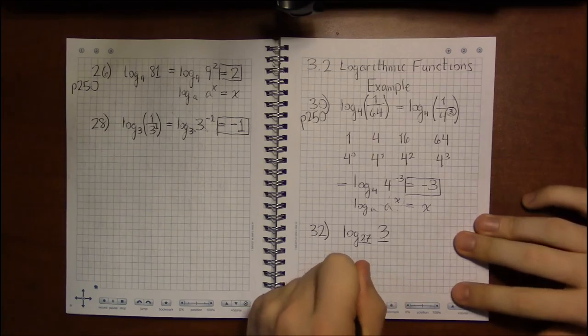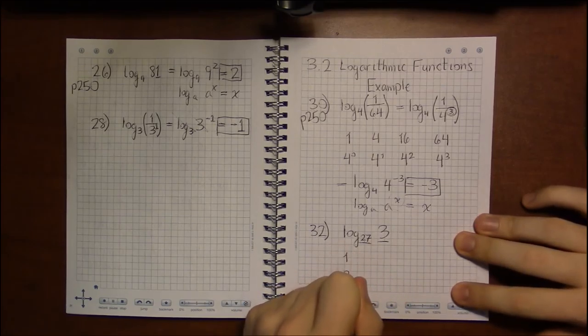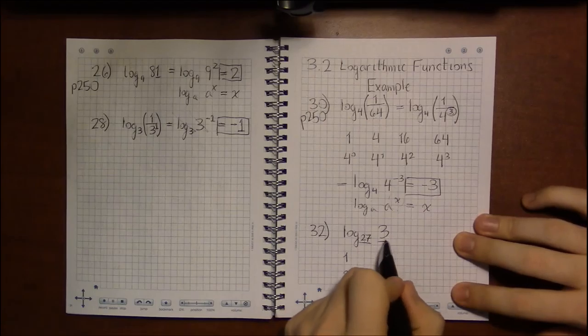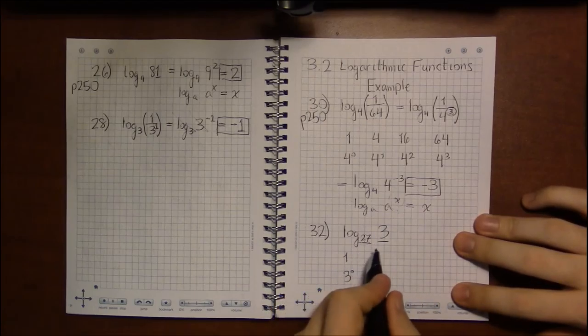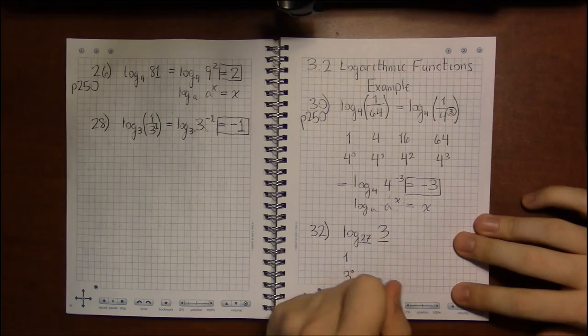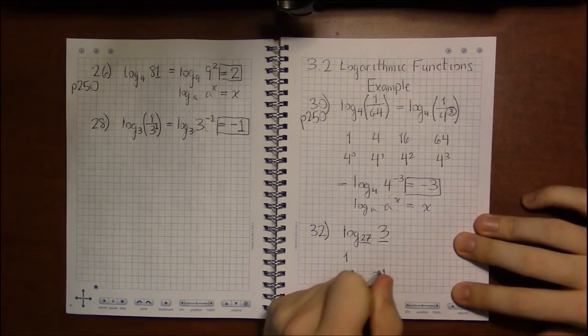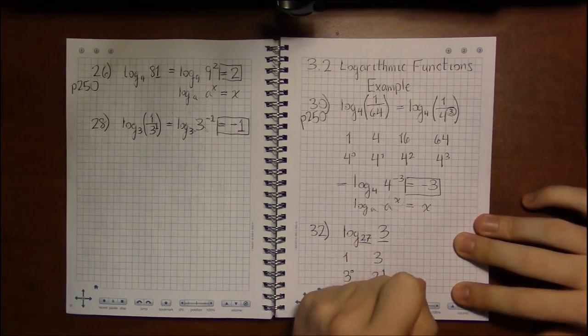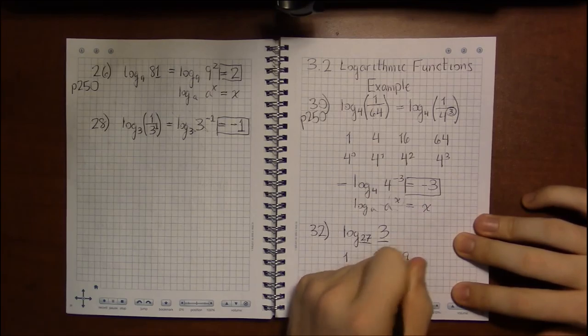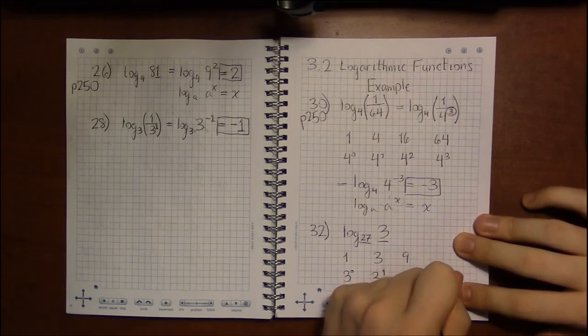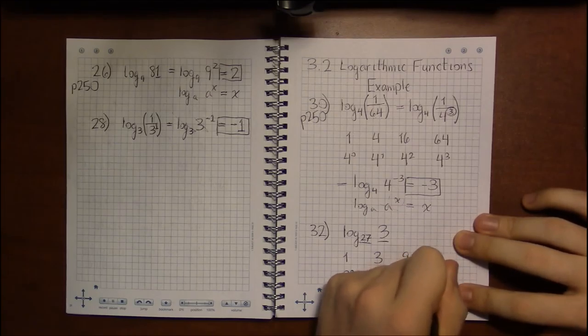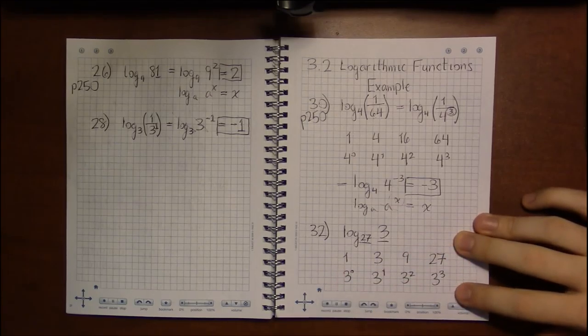Let's see if I can write 3 as a power of 27. 3 to the 1st is 3. 3 squared is 9. 3 cubed would be 3 times 9, which is 27. Well, there's 27.